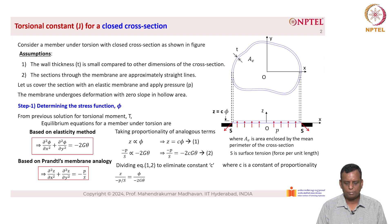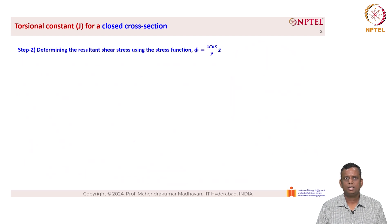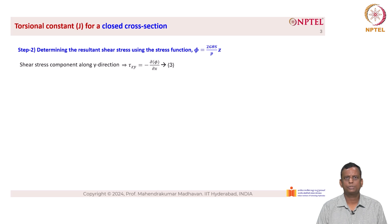Dividing equation 1 by equation 2 to eliminate the constant, we get z/(−p/S) = φ/(−2Gθ), which implies φ = (2Gθ·S/p)·z. This indicates that the stress function phi is a function of z but not of x and y. Step 2 is to determine the resultant shear stress using φ = (2Gθ·S/p)·z. The shear stress component along the y direction is τ_zy = −∂φ/∂x (equation 3), and along the x direction, τ_zx = ∂φ/∂y (equation 4), both derived in previous classes.